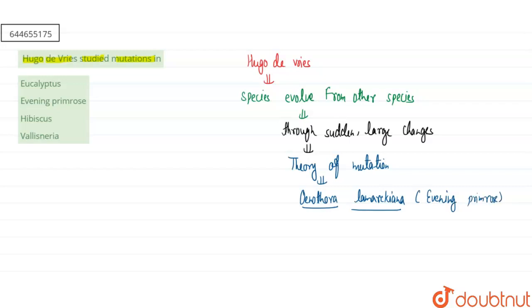So Hugo de Vries conducted experiment on this plant. So here our correct answer will be the second option, that is Evening Primrose, or we can say Oenothera lamarckiana.